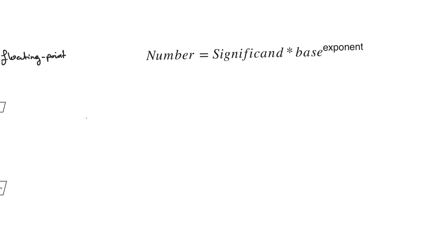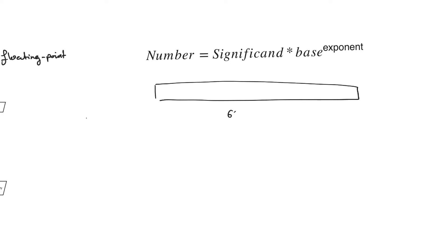Floating point numbers use a register — for example, a 64-bit register — divided into three components: a significand, a base, and an exponent. The number is represented using these components, each taking part of the register. The good thing about floating point representation is that it allows you to represent a huge range of numbers, basically due to the exponent, which is what allows us to have a large range.